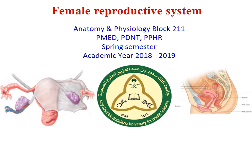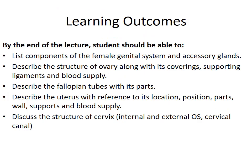Assalamu alaikum. This is the female reproductive system discussion for the Premed 211 students. These are the learning objectives: the student will be able to list the components of the female genital system and accessory glands, describe the structure of the ovary along with its coverings, supporting ligaments and blood supply, describe the fallopian tube with its parts, and the uterus with reference to its location, position, parts, wall, supports and blood supply. Lastly, the students will be able to discuss the structure of the cervix.